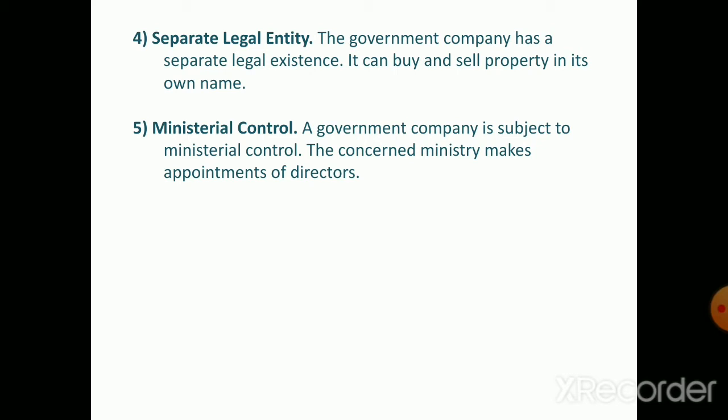The fifth feature is ministerial control. A government company is subject to ministerial control, where the ministry makes the appointment of directors, issues directions, and assumes overall supervision of the undertakings. All functions of the government company fall under ministry control, which oversees the entire department and its undertakings.